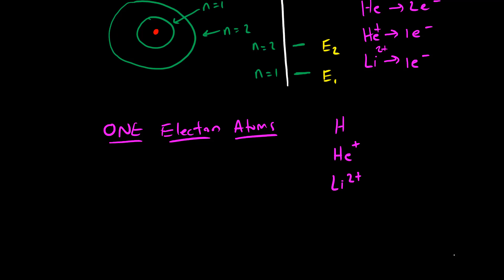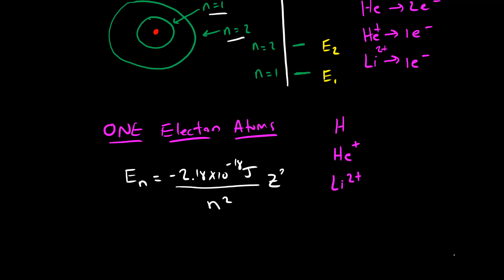The equation gives us the energy of the nth shell, the nth energy level — so n equals one, n equals two, n equals three — and it is equal to minus 2.18 times 10 to the minus 18th joules, divided by n squared, times z squared. Here, n is the shell number and z is the atomic number.